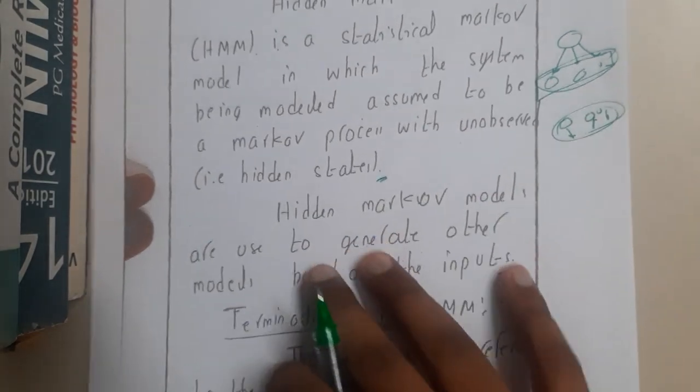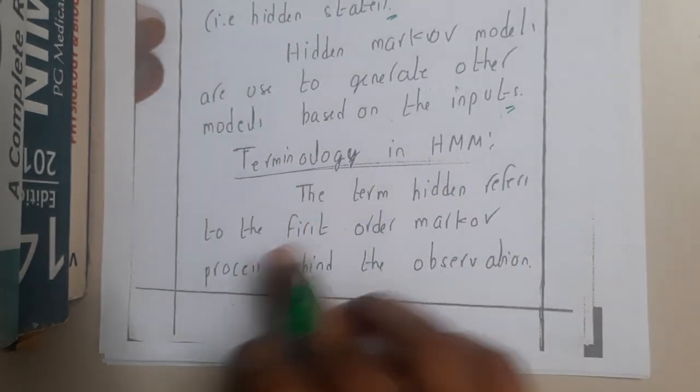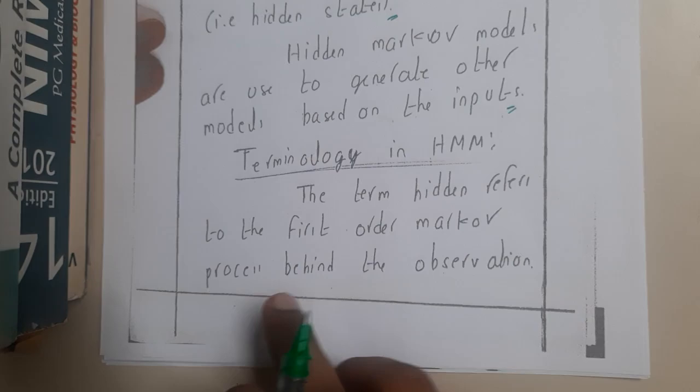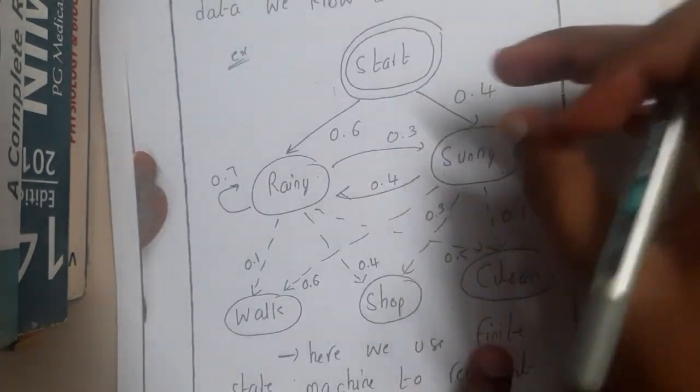Some basic terminology in HMM: the term 'hidden' refers to the first order Markov process behind the observations. Observation refers to the data which we are using. So here assume...